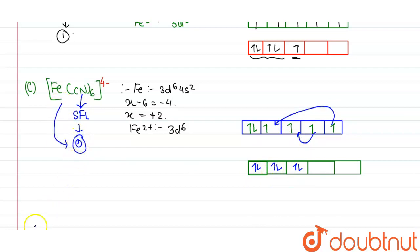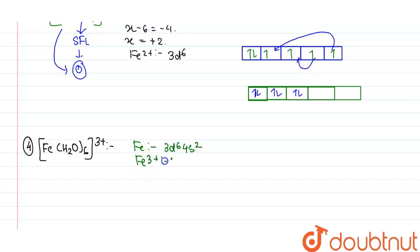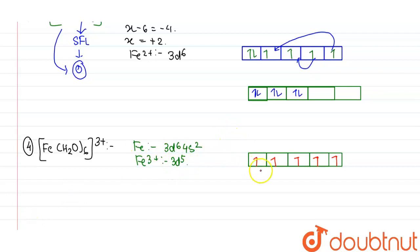The next complex has iron with outer electronic configuration 3D6, 4S2, and iron is in +3 oxidation state, so it becomes 3D5. Drawing the orbital picture, there are 5 unpaired electrons present. So the number of unpaired electrons in this complex is 5.